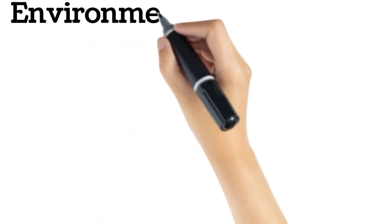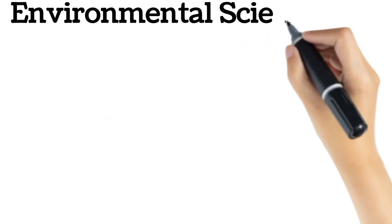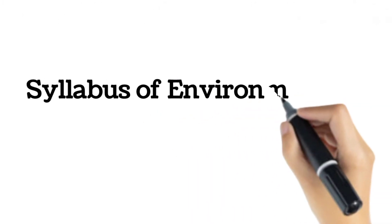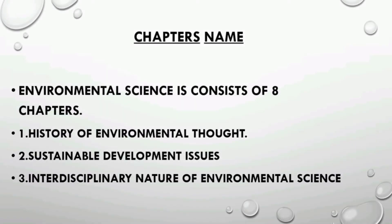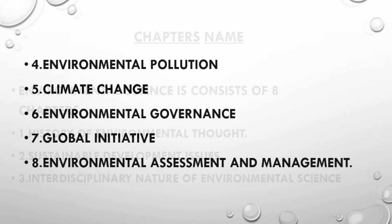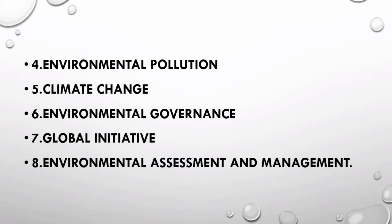We will discuss the syllabus of Environmental Science in the CSS exam. Environmental Science is an optional subject in the CSS syllabus. The syllabus consists of eight chapters: one, history of environmental thought; two, sustainable development issues; three, interdisciplinary nature of environmental science; four, environmental pollution; five, climate change; six, environmental governance; seven, global initiatives; eight, environmental assessment and management.